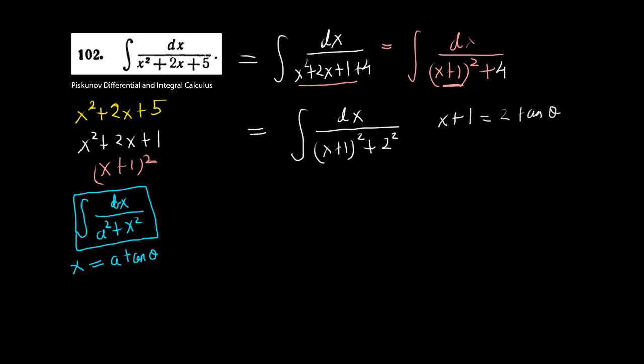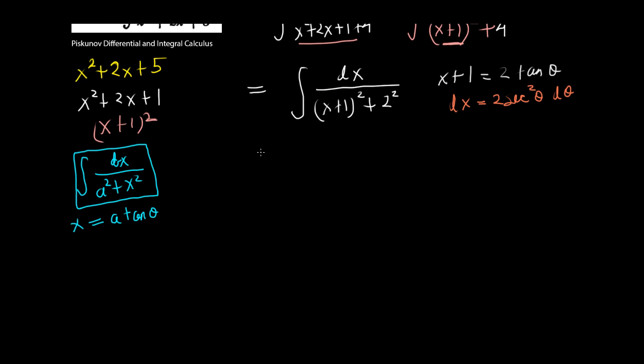Now, I will differentiate both sides to get that the differential of this side is just dx. And the differential of the right-hand side is 2 times the secant squared of theta, d theta.